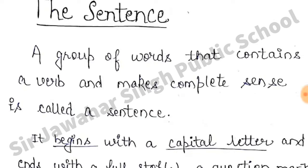We will learn what a sentence is. A group of words that contains a verb and makes complete sense is called a sentence. There are many groups of words in which there is a verb and a complete sense. Like: 'He opened the door' — it has a verb and there is complete sense.